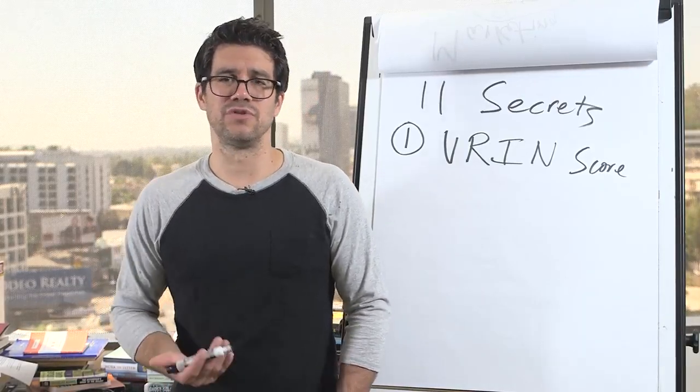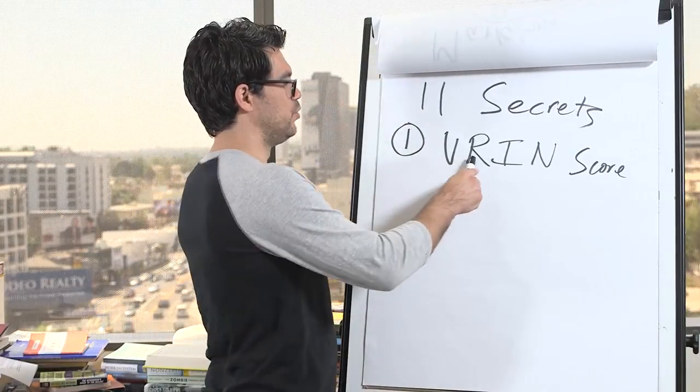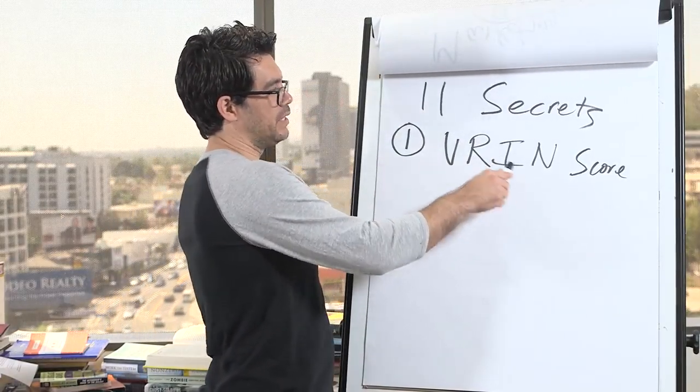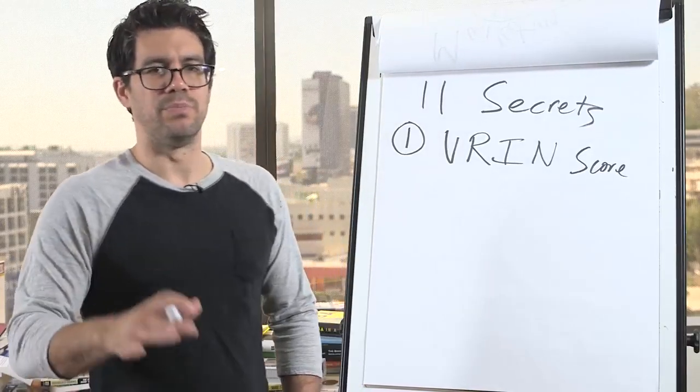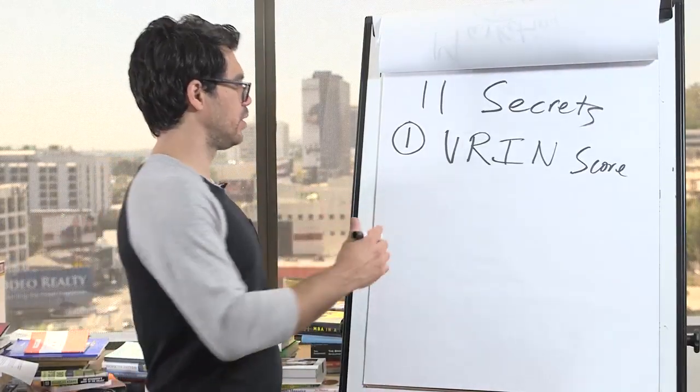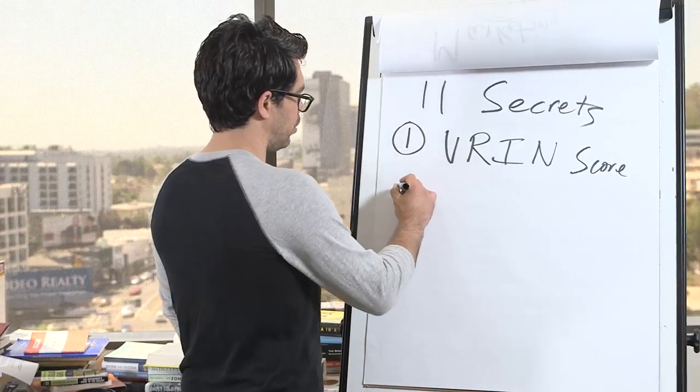But once I knew it, it made all the difference in the world. And so you got to know your VRIN score, which is basically value, rare, inimitability, and non-substitution. Now, I don't know if I'm going to explain all those, but I wanted to give you the high level one, and then I'll show you how you can learn all of them if you want to know.